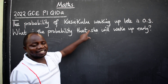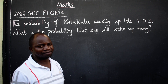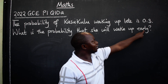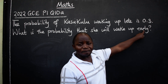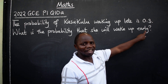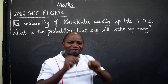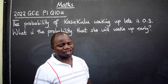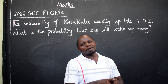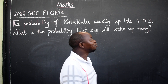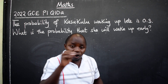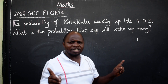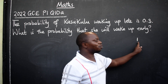Whenever you are given such questions, look at this — late, early. Don't you think they are opposite? They are. So whenever you are given such, just know that when you add the two probabilities they should always give you one. As long as they are in opposite, they should give you one.